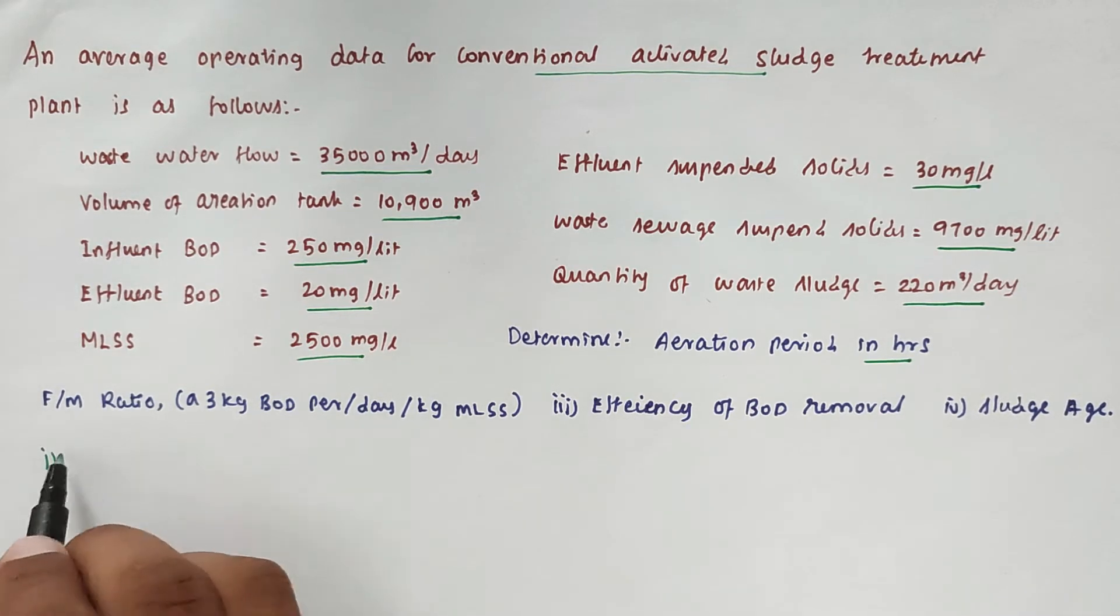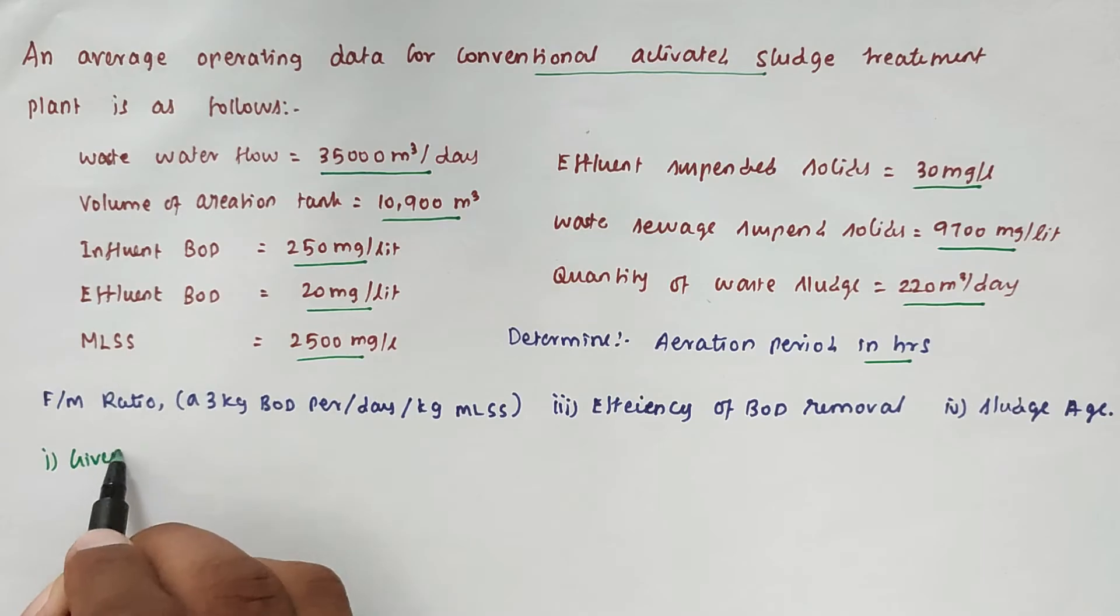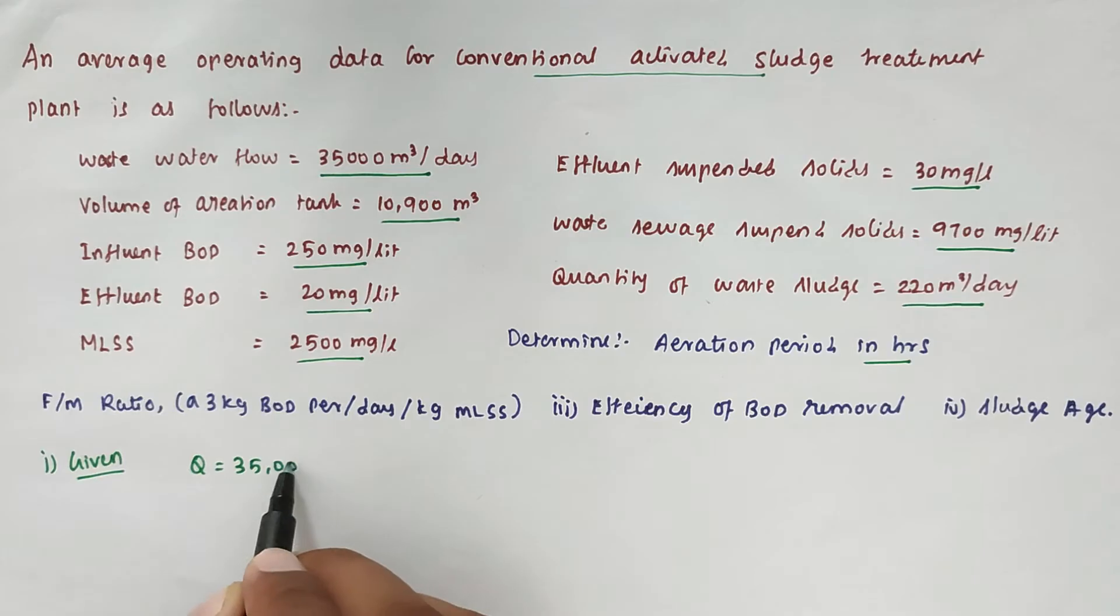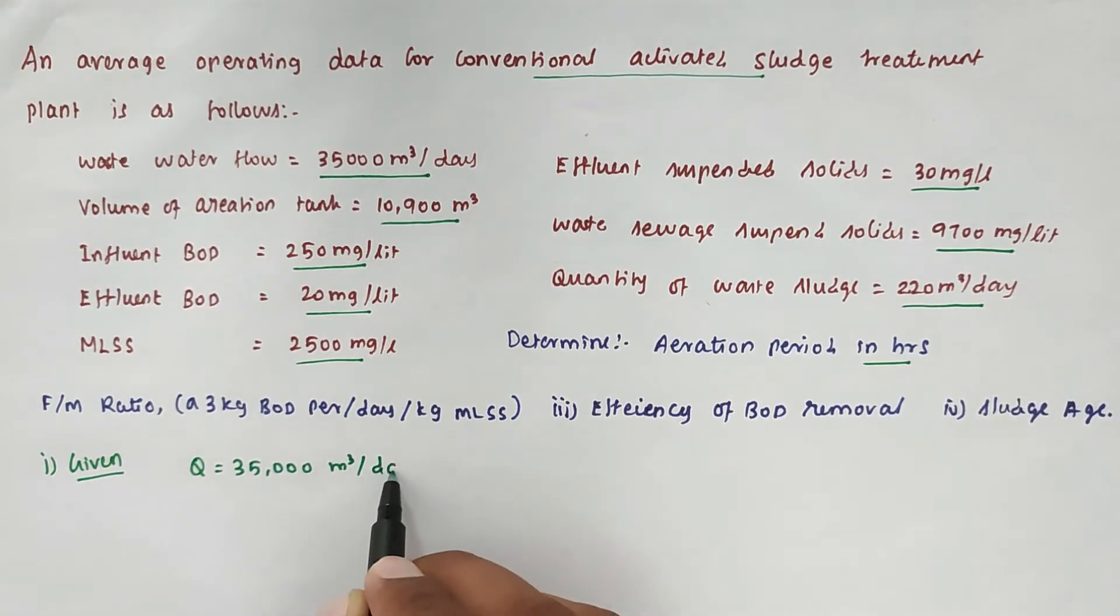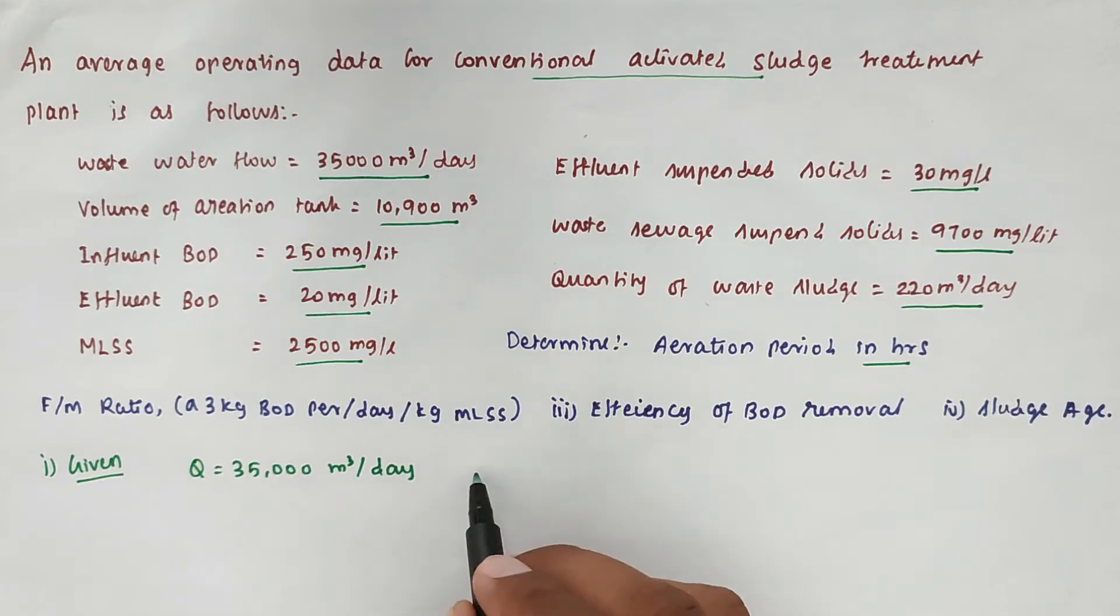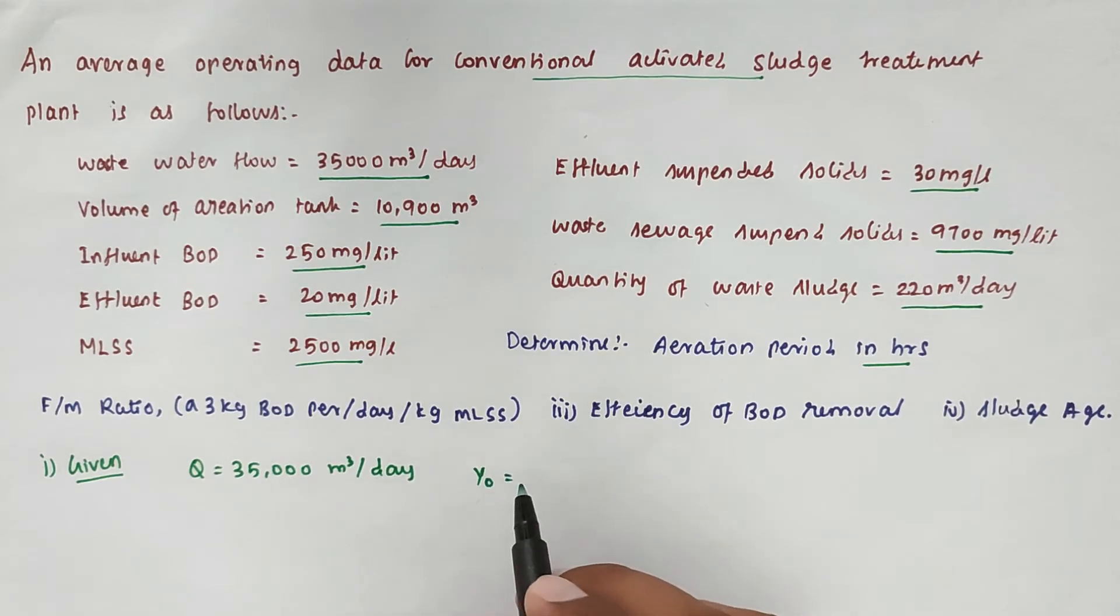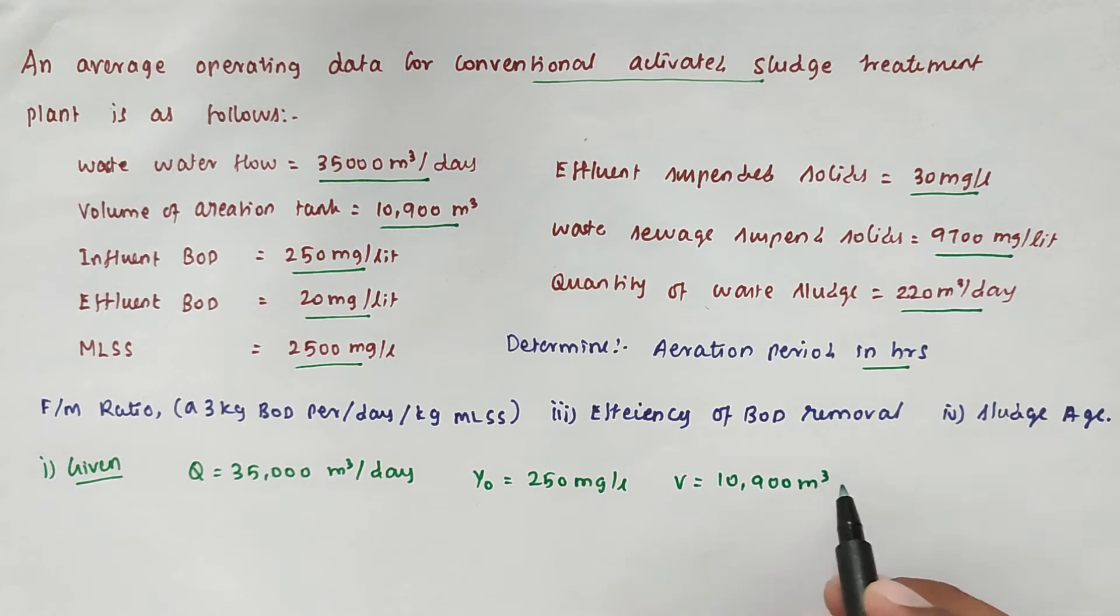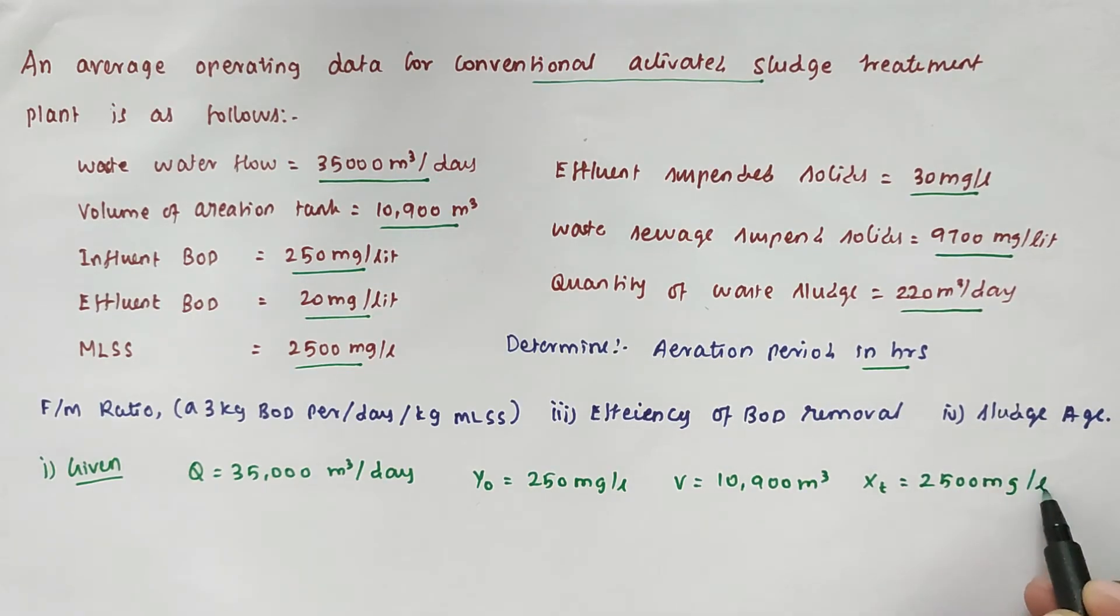First thing is given values. The Q value is 35,000 m³ per day. Influent BOD Y₀ is 250 mg per liter. Volume of aeration tank V equals 10,900 m³. XT, that is MLSS, is 2500 mg per liter.